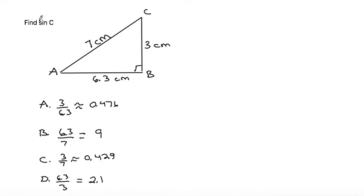So in this problem we're looking for sine of C. We're given this triangle. First of all we need to know that sine of an angle is equal to the opposite over the hypotenuse side lengths.